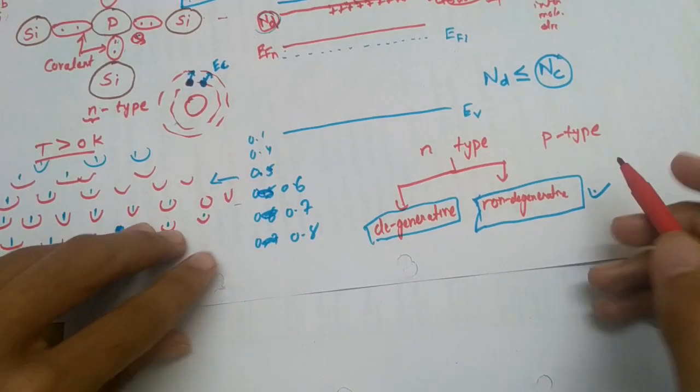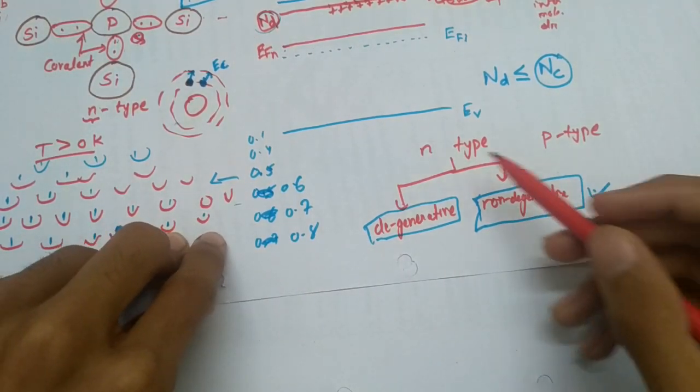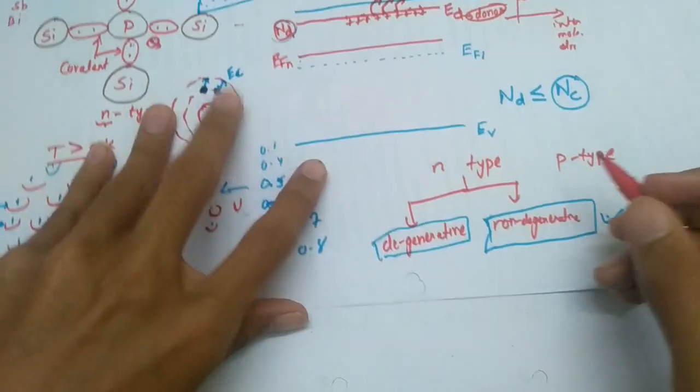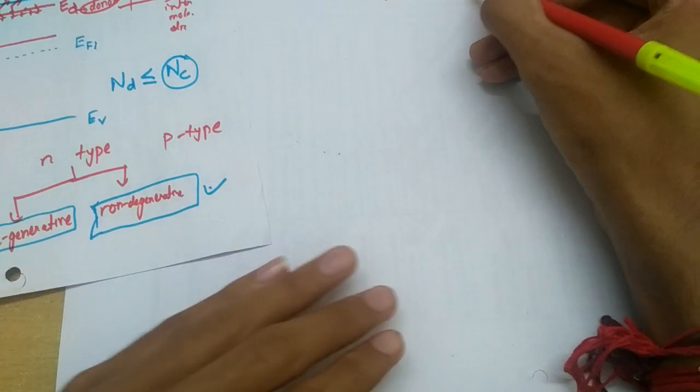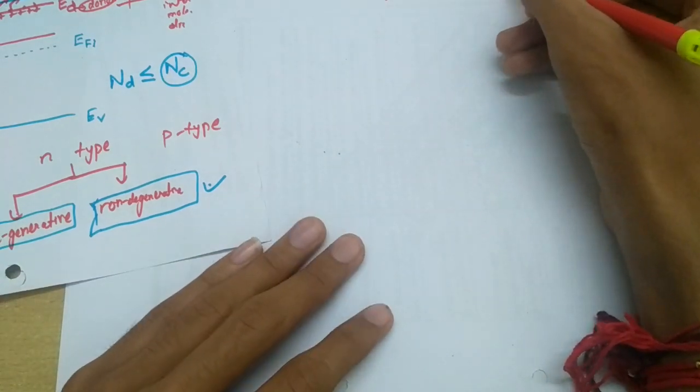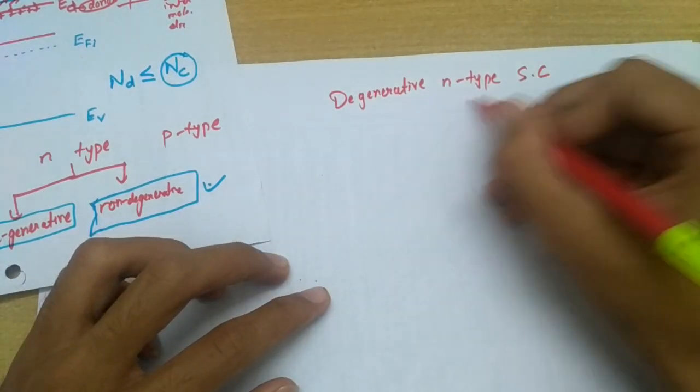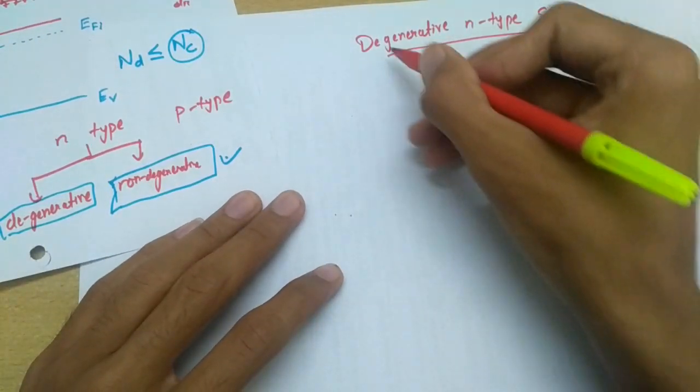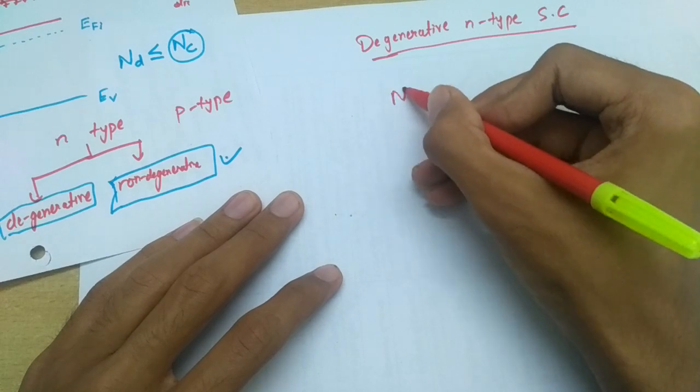Having discussed the non-degenerative type, now we will be moving towards degenerative n-type semiconductor. As we said that in non-degenerative type semiconductor...